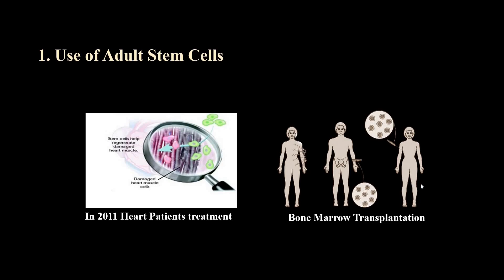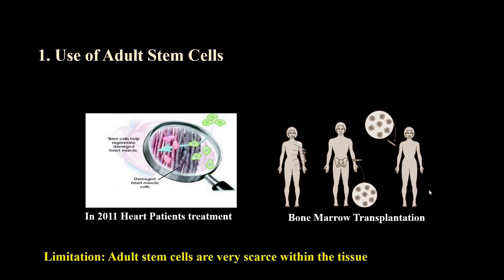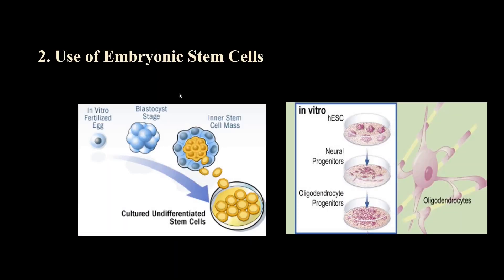Embryonic stem cells are another kind of stem cell used for various experimental investigations. We obtain embryonic stem cells from a very young mammalian embryo, and most of these embryos are produced by in vitro fertilization. This embryonic stem cell procedure was first tested in 2009 for therapeutic purposes, and for the first time patients suffering from spinal cord injuries were treated.